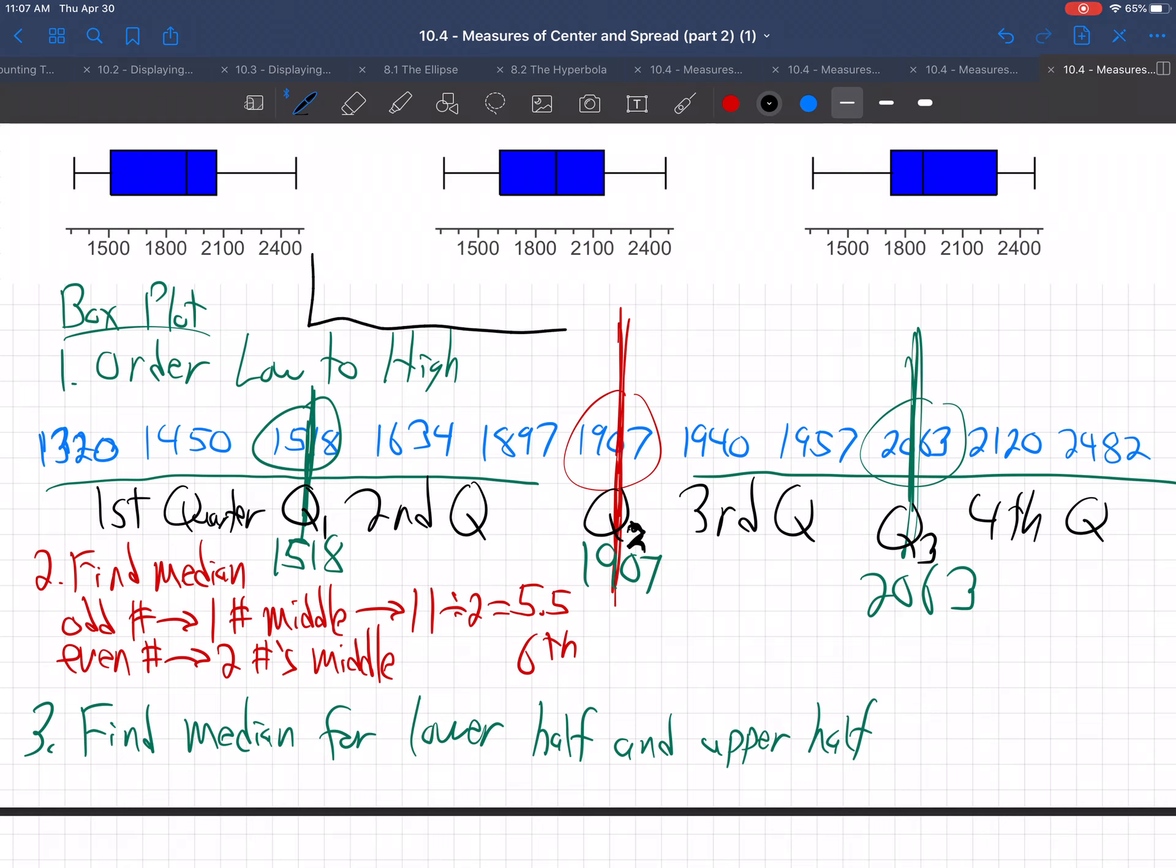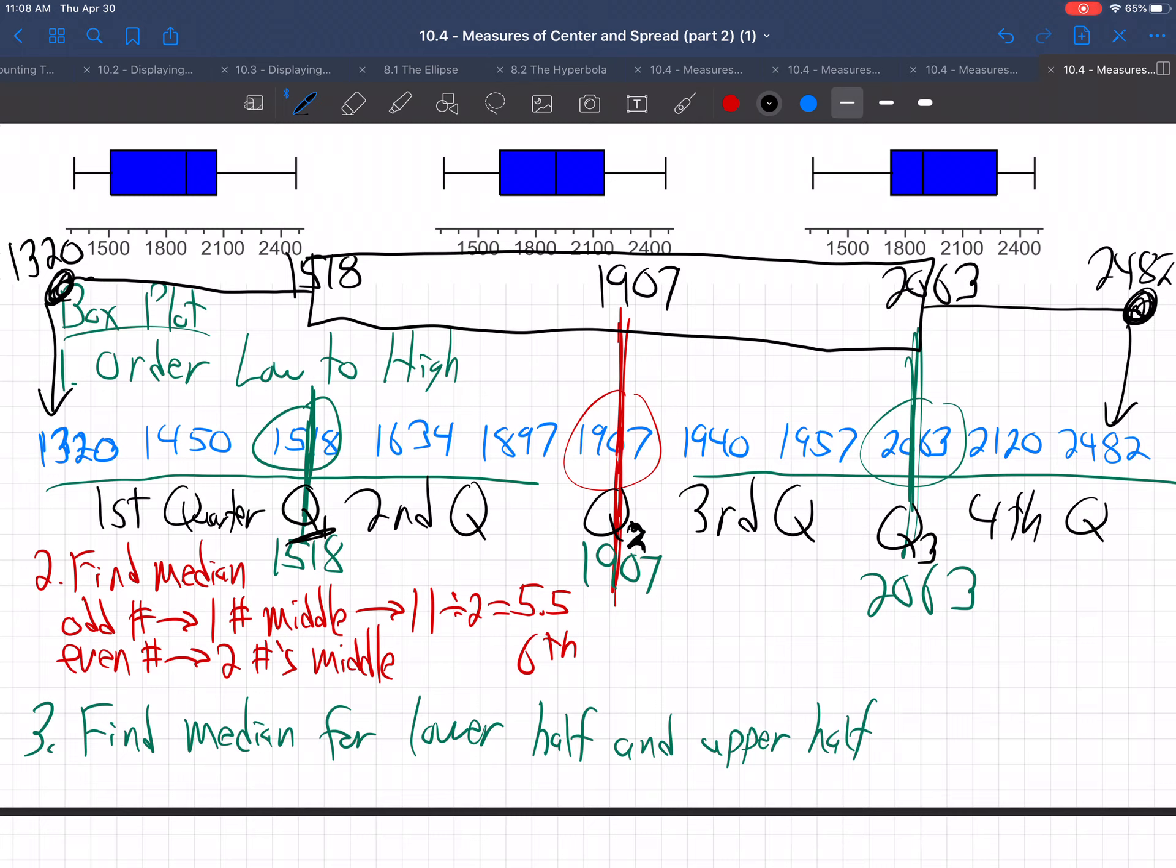And then you make your box from here to here. And then you extend what are called your whiskers to the highest number and to the lowest number. So that would be the 1320 here, the 2482 there. This number here is 1518 because it's the Q1. This number here is the 1907, the Q2 or the median. And the Q3, 2063. That's what a box plot does. The box goes from Q1 to Q3, with the median or Q2 in the middle, the lowest numbers on the bottom, the highest numbers on the top. It shows you the spread of the data in four sections.